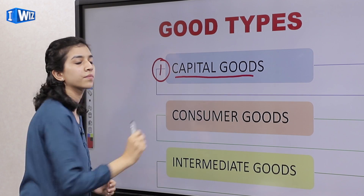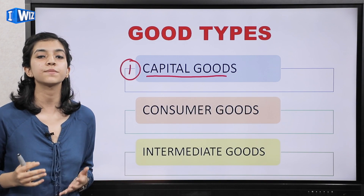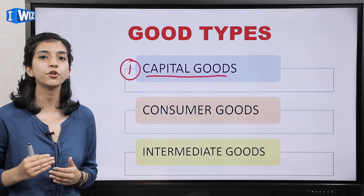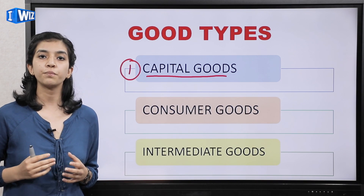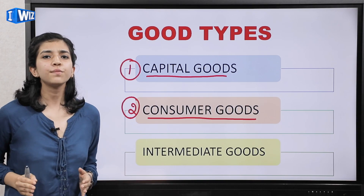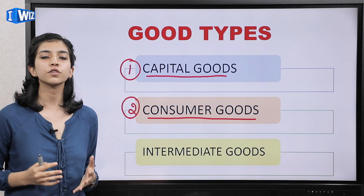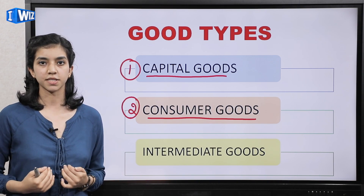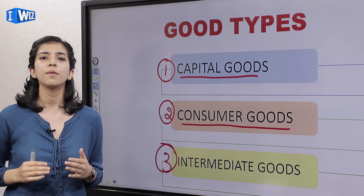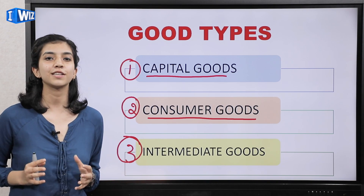The first type is capital goods. Capital goods wo goods hote hain jin ko doosri industries mein use kiya jata hai. For example, machinery — a particular industry produces machineries and after production they will be used in other industries for production of goods. The second type is consumer goods — those goods which you and I both consume on a daily basis, for example breads, medicines etc. They are directly produced and come to us the consumers. The third type is intermediate goods — wo goods jo produce to hote hain but after their production, their manufacturing and processing is done in other industries.